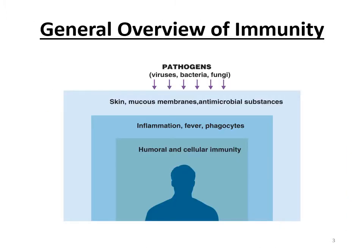This slide gives you a general overview of all the aspects of immunity. For the outer light blue square — skin, mucus, and antimicrobials — write innate immunity. For inflammation, fever, and phagocytes, write the word both, because they are part of innate immunity but also part of adaptive immunity. Then write adaptive for humoral and cellular immunity, because humoral and cellular immunity only belong to your adaptive immune system.